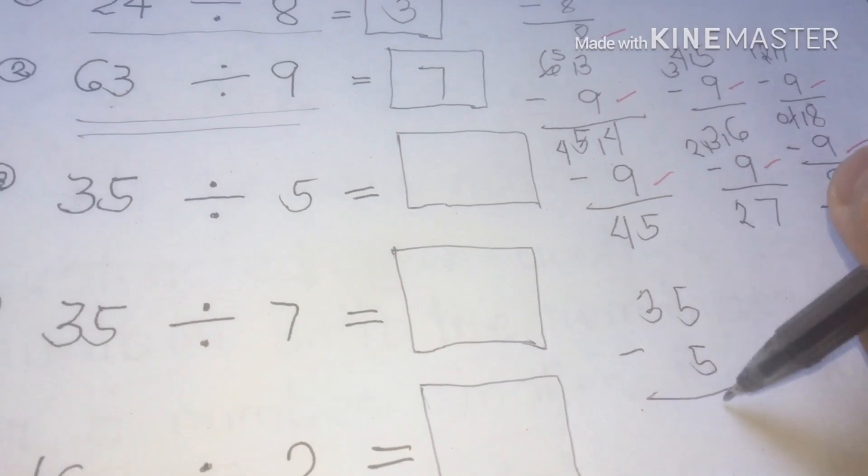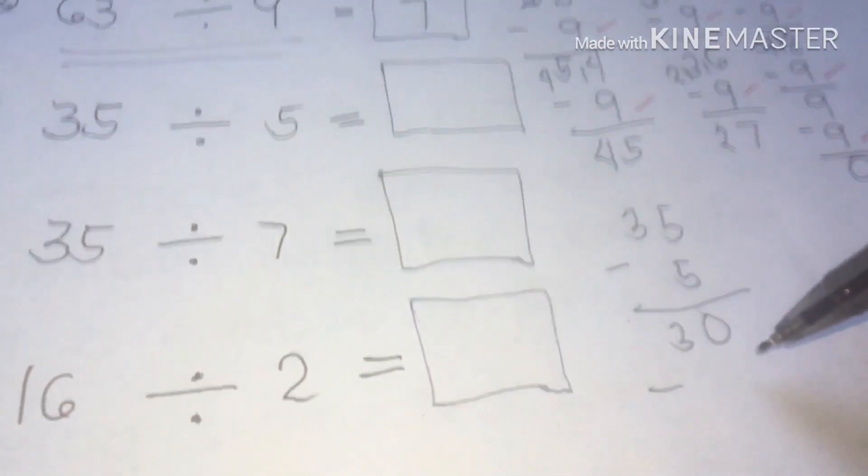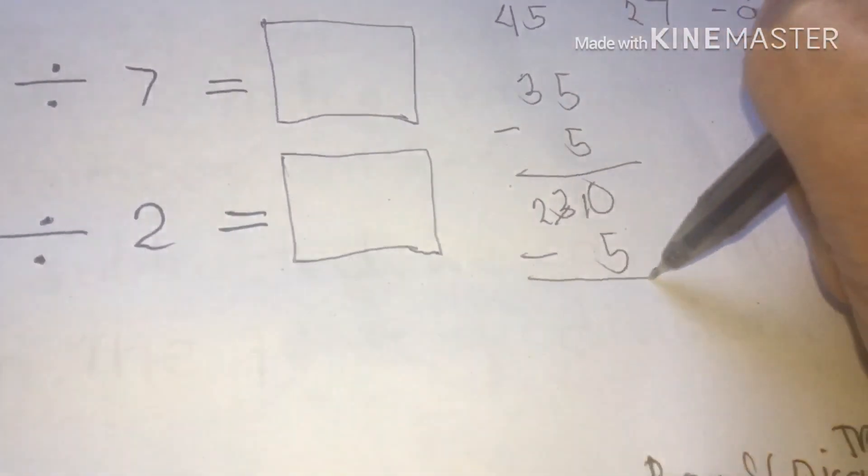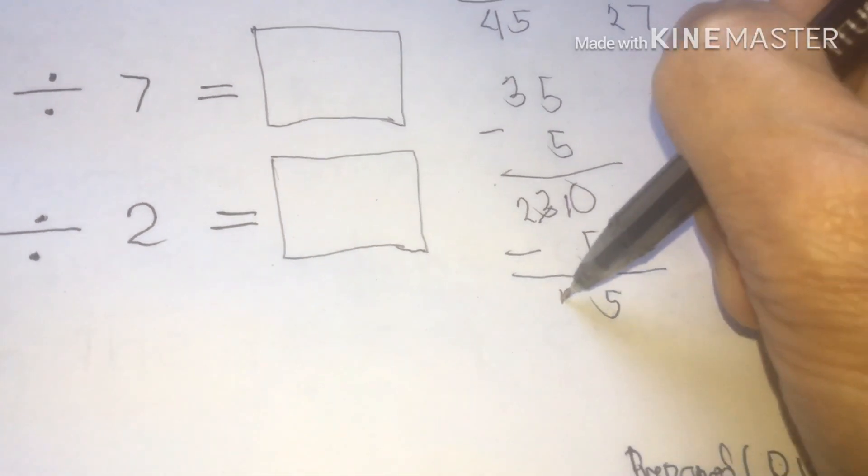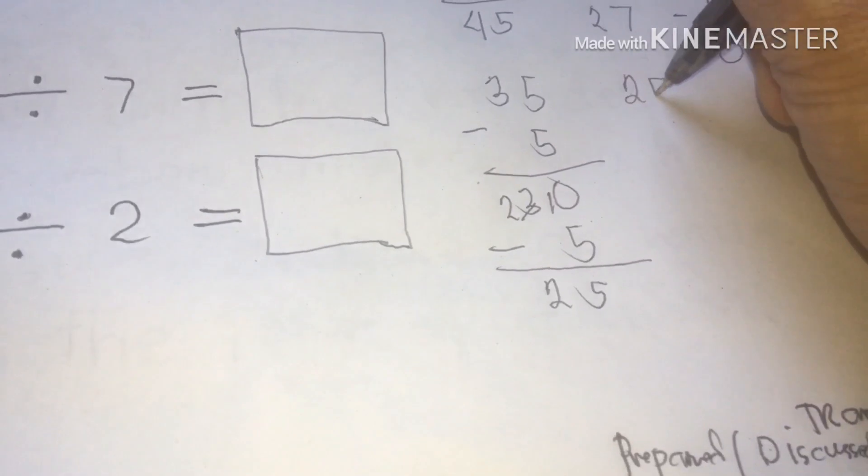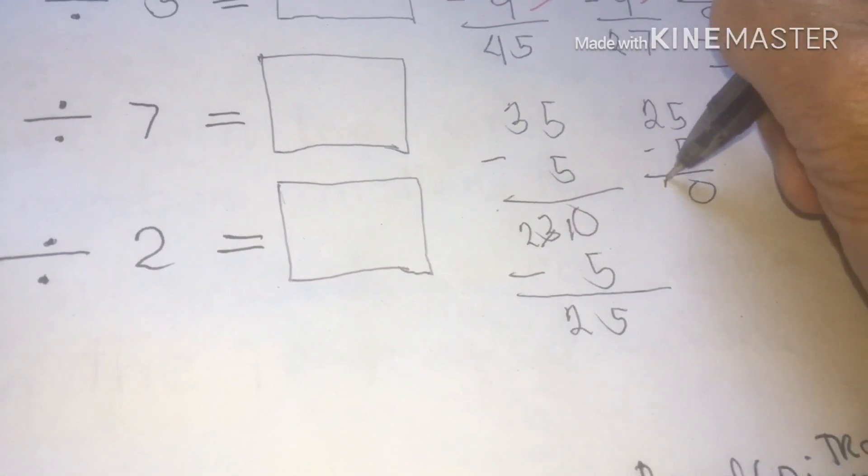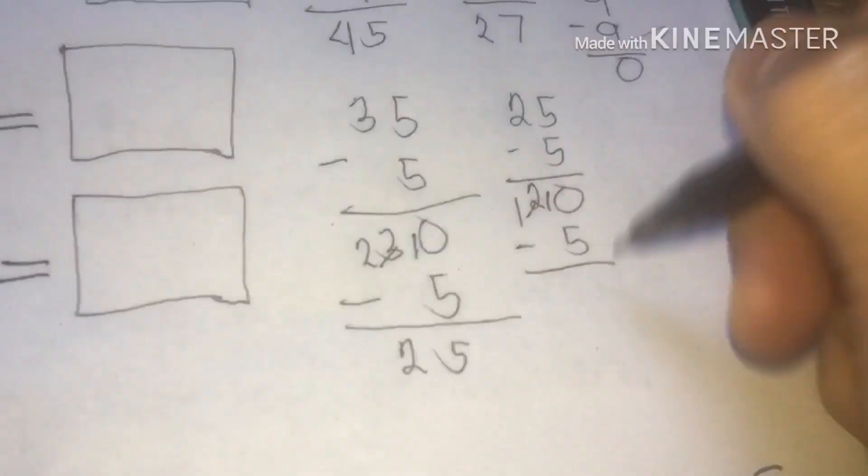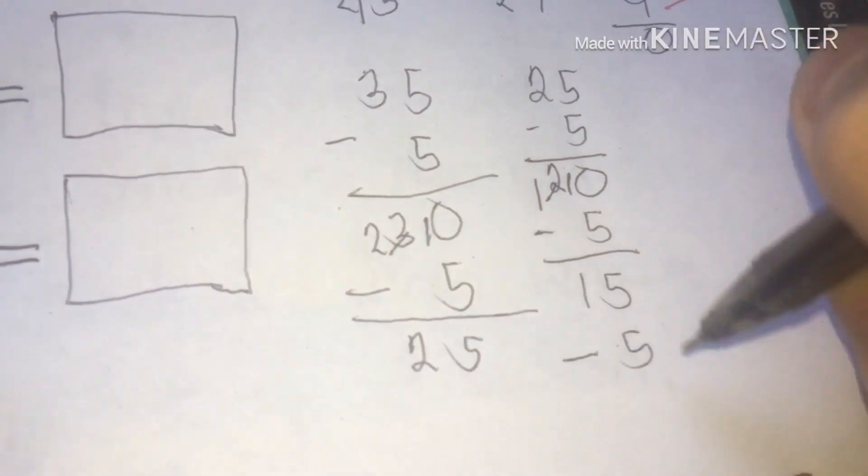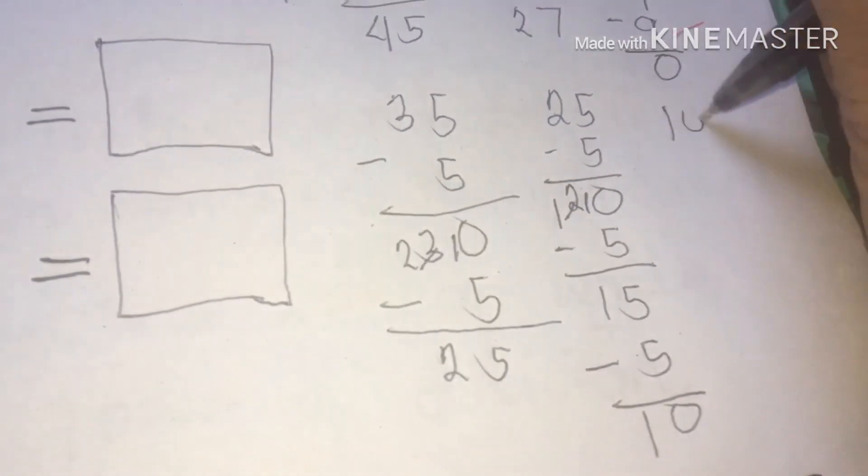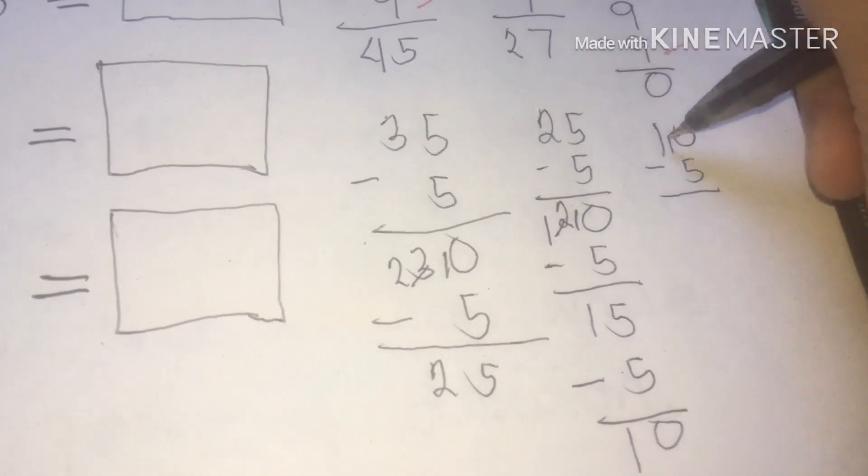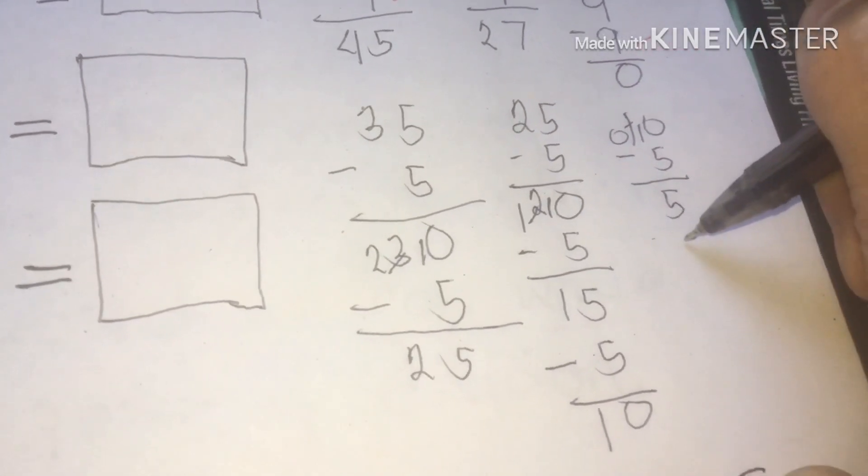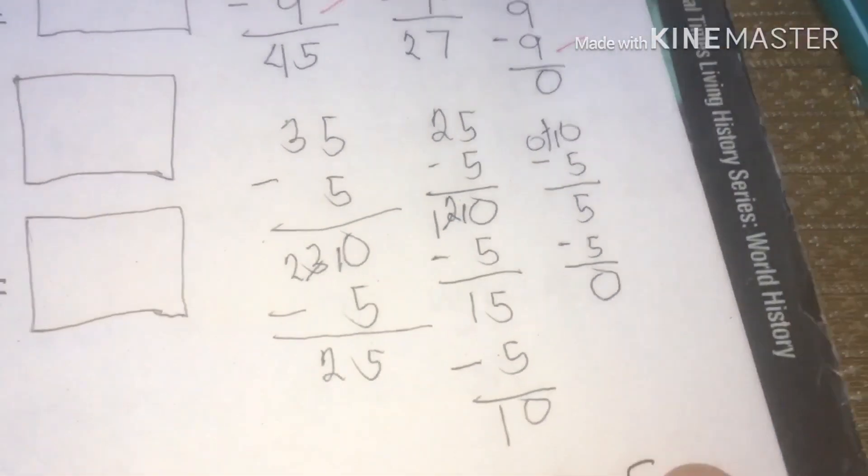So I start 35 minus 5. We have 30. Continue my dear pupils. Please watch guys. 30 minus 5, that's 25. Minus 5, we have 20. 20 minus 5, that's 15. Minus 5, we have 10. 10 minus 5, we have 5. And 5 minus 5, we have 0. Let's count again, my dear pupils.